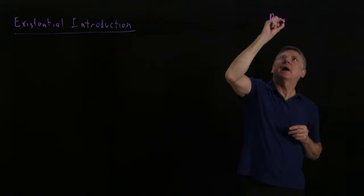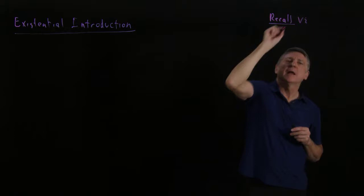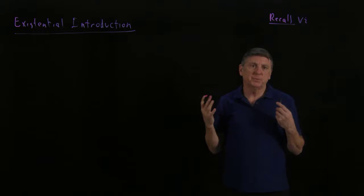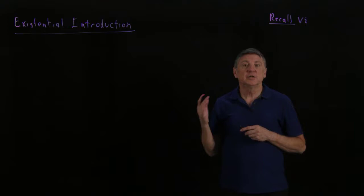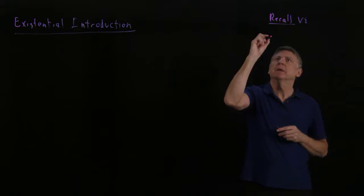From propositional logic, let's recall how we introduced disjunction. That was a fairly simple process. If we put it in English, what we're saying is if a formula is true, then that formula disjoined with any other formula is true. And we had two ways that we could do that.